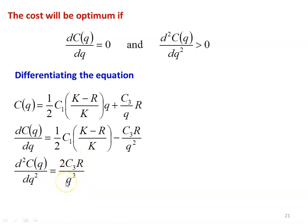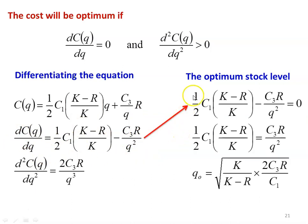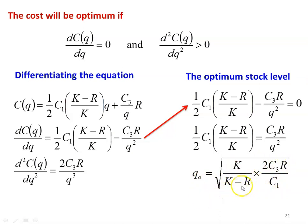To get the optimum cost, we set dC/dq = 0. From here: (1/2) × c1 × (k minus r)/k minus c3r/q² = 0. Rearranging: (1/2) × c1 × (k minus r)/k = c3r/q². The optimum stock level q_o = sqrt(k/(k minus r) × 2c3r/c1). Comparing with the previous model where q_o = sqrt(2c3r/c1), now it is multiplied by sqrt(k/(k minus r)).